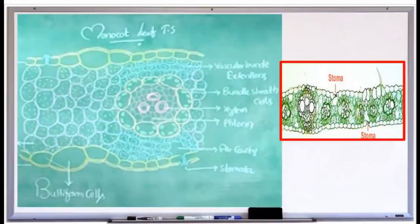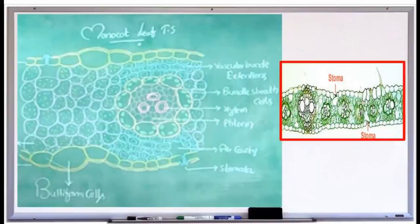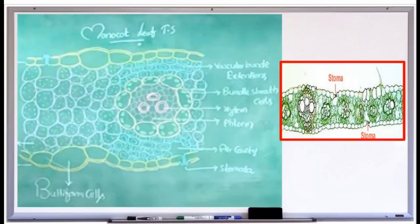The second structure is mesophyll, which is not differentiated into palisade and spongy parenchyma. All the cells are similar, irregularly arranged with intercellular spaces, and contain chloroplasts. The third structure is the vascular bundle — many bundles are found, some very small and some very large, each surrounded by a parenchyma bundle sheath. The bundle is described as conjoined, collateral, and closed.